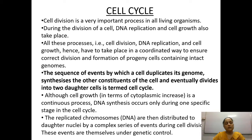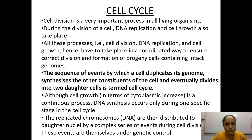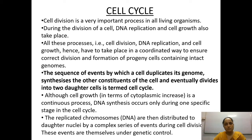Cell division is a very important process in all living organisms. Whatever wearing and tearing of tissue occurs, it needs to be replaced with new cells. For new cell formation, the cell has to divide. During cell division, DNA replicates — it produces a copy of its own genetic material — and cell growth also takes place with an increase in cytoplasm. All these processes — cell division, DNA replication, and cell growth — have to take place in a coordinated, stepwise manner to ensure formation of progeny cells containing intact genomes.